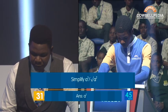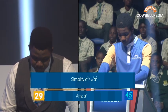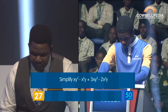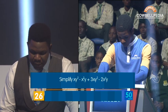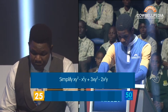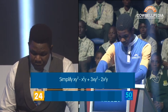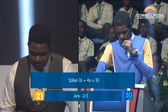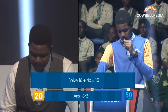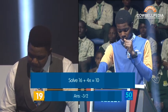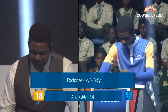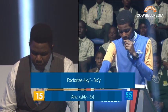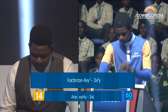Simplify A raised to the power 3 divided by the square root of A squared. A raised to the power 2. Correct. Simplify XY squared minus X squared Y plus 3XY squared minus 2X squared Y. 16 plus 4X equals 10 — minus 3 over 2. Correct. Factorize 4XY squared minus 3X. XY into bracket 4Y minus 3X. Correct.